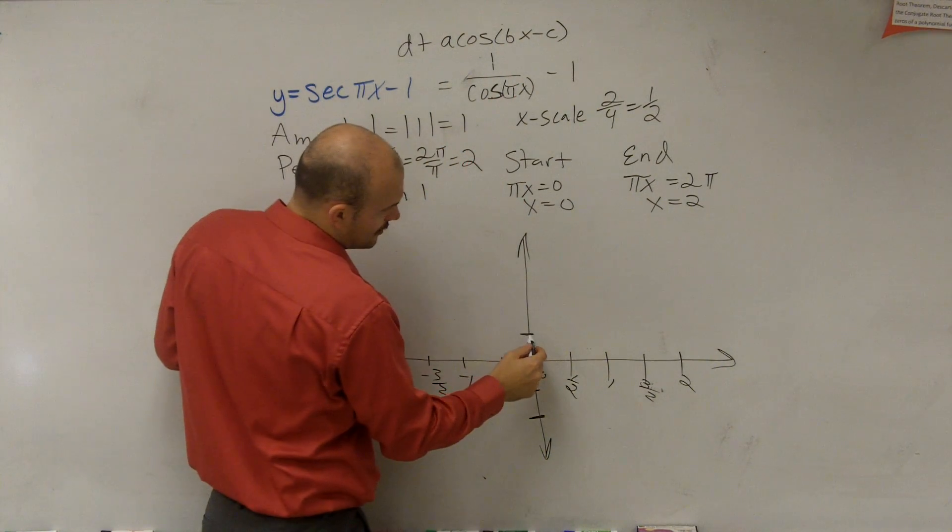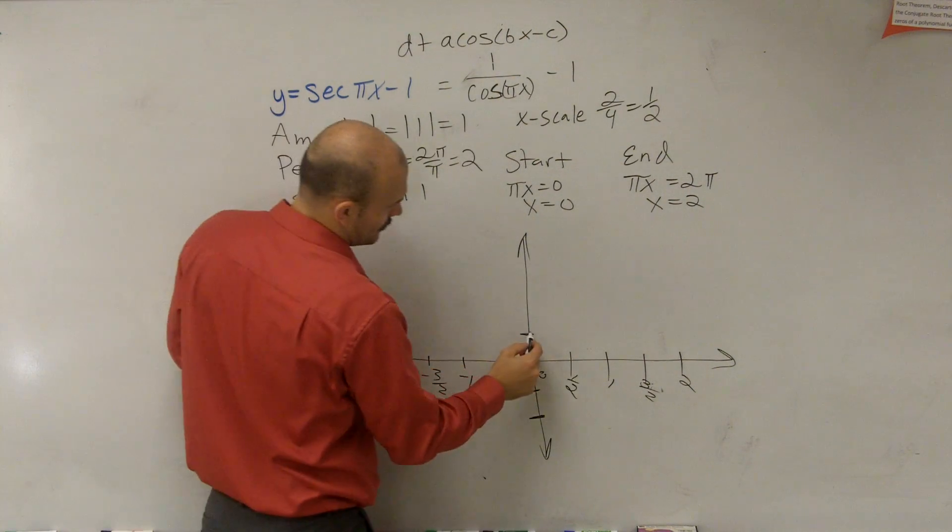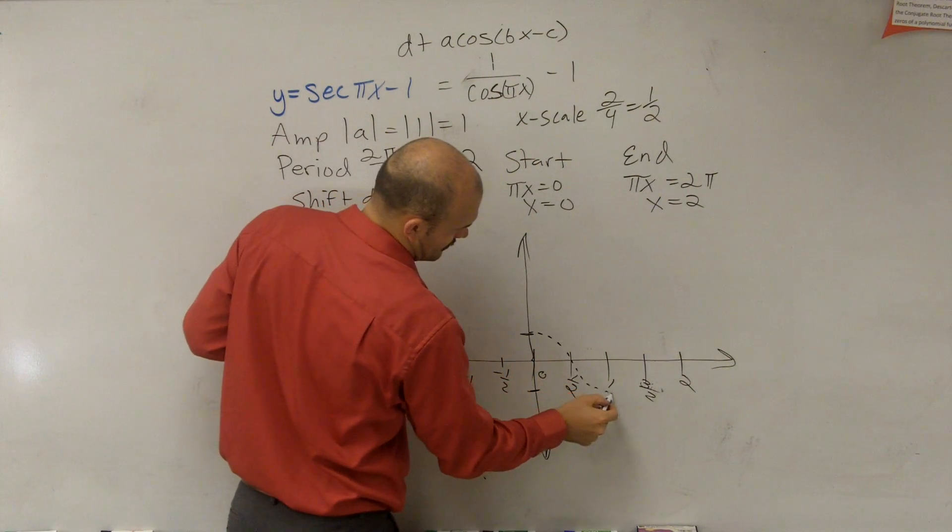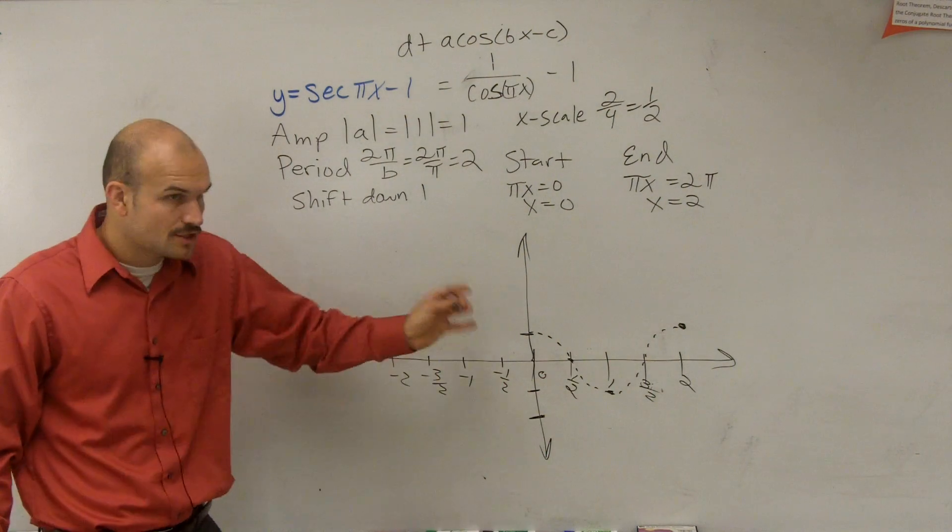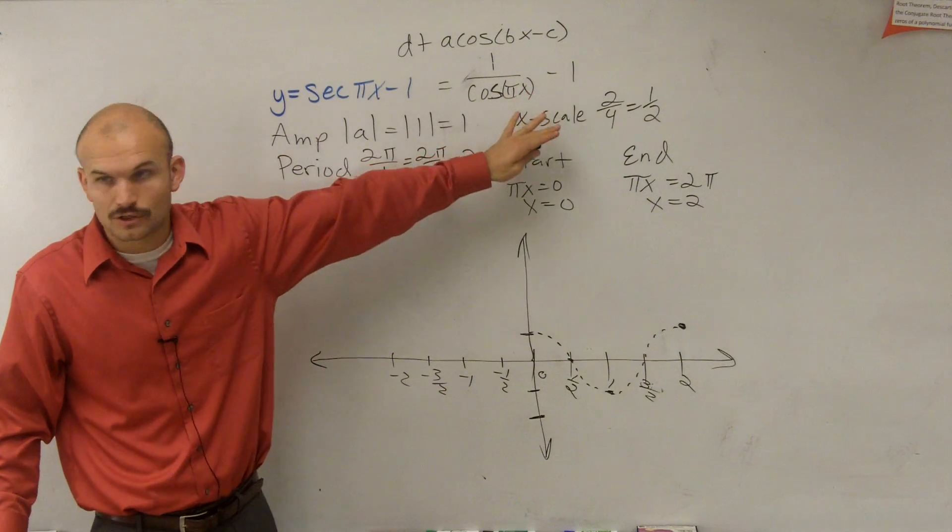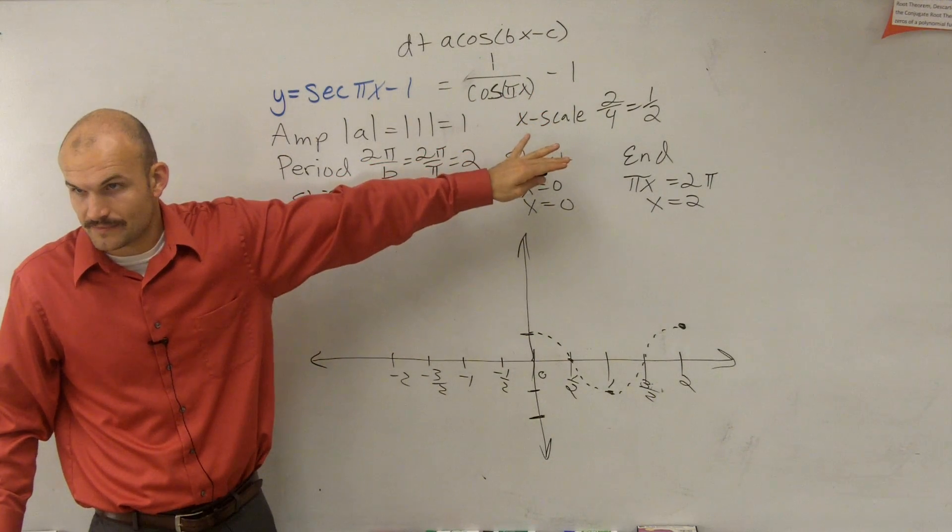Because it might be helpful to graph the parent graph. So if I was going to graph it without a minus 1, the graph would look like this. That's cosine of x without the vertical translation.